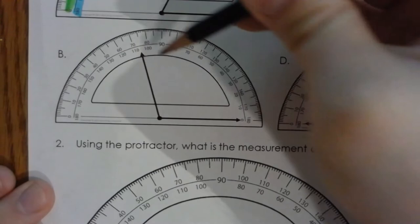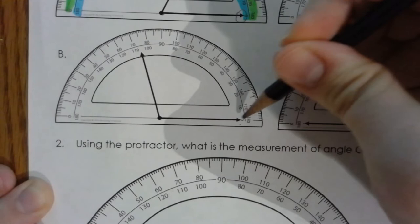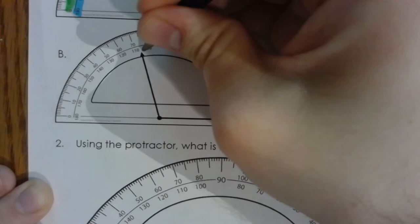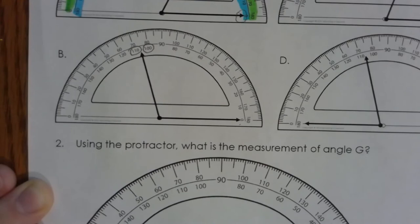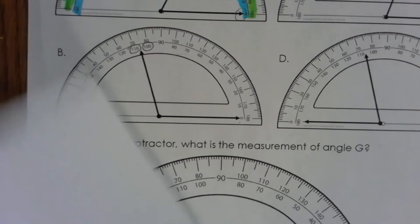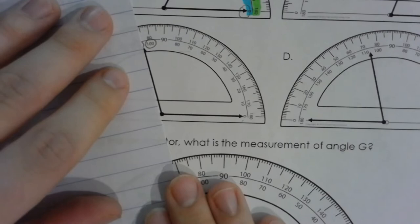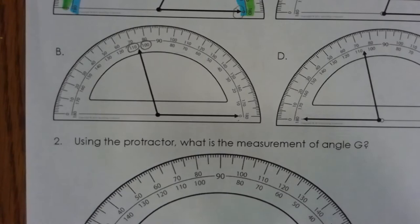Let's look at B. Again, we're going to use the inner set — you can see that this ray points right to zero. Looking at the inner set of numbers, this ray is pointed between 100 and 110. So we know this is not going to be as close to 75, since those numbers are way away. But let's still figure out exactly where it's pointing using the piece of notebook paper — and again it's right at that halfway point.